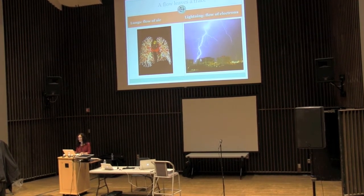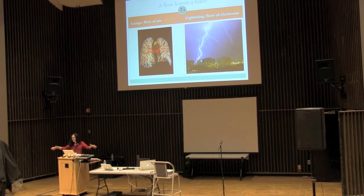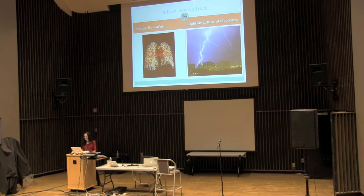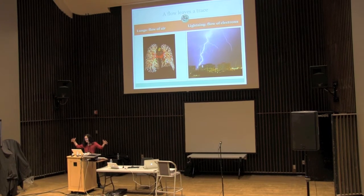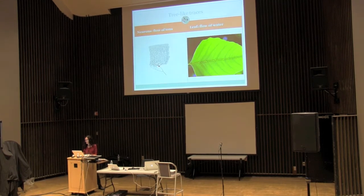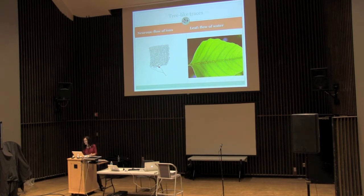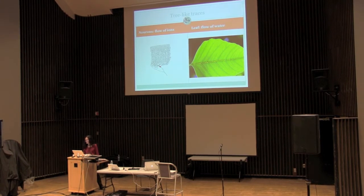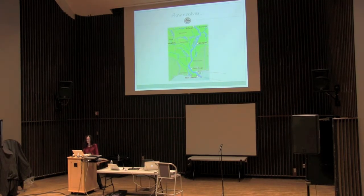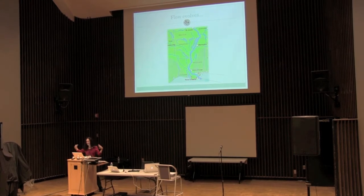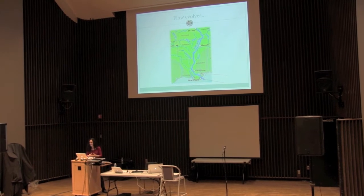Something evolved by the most efficient path from one point to many points, or from any large area down to a single point. The structure of the lungs shows an efficient way to distribute air from a single source out to the large area of the lungs. A lightning strike shows the path of electricity going from a large area to a single strike point on the ground. Tree-like neurons facilitate the flow of ions, and the veining pattern in a leaf facilitates the efficient flow of water and nutrients. But the trace is just evidence of the process. What's perhaps more interesting to us as musicians and sound designers is the dynamic and the actual process itself — how it evolved into that tree structure.